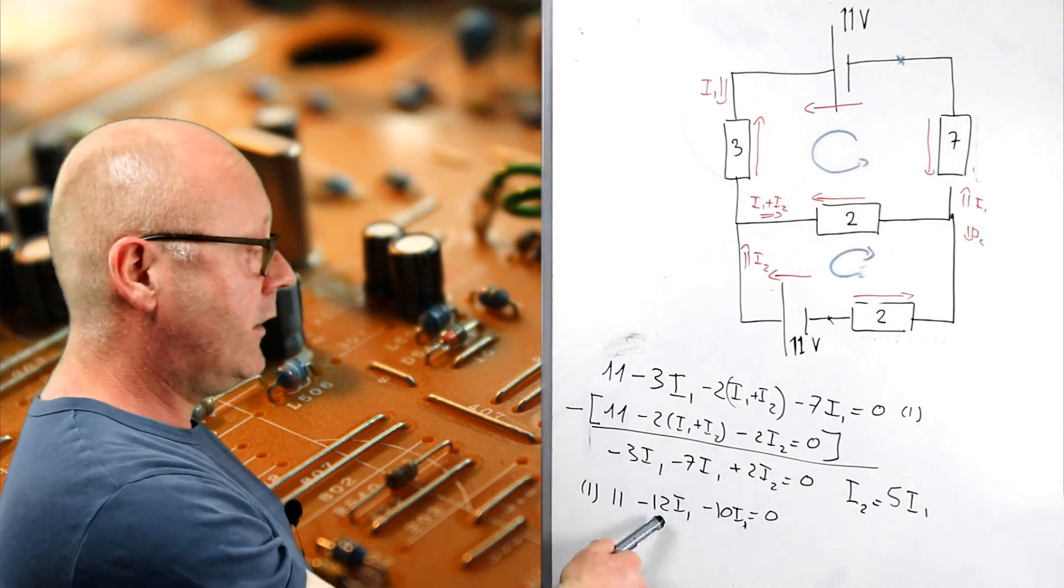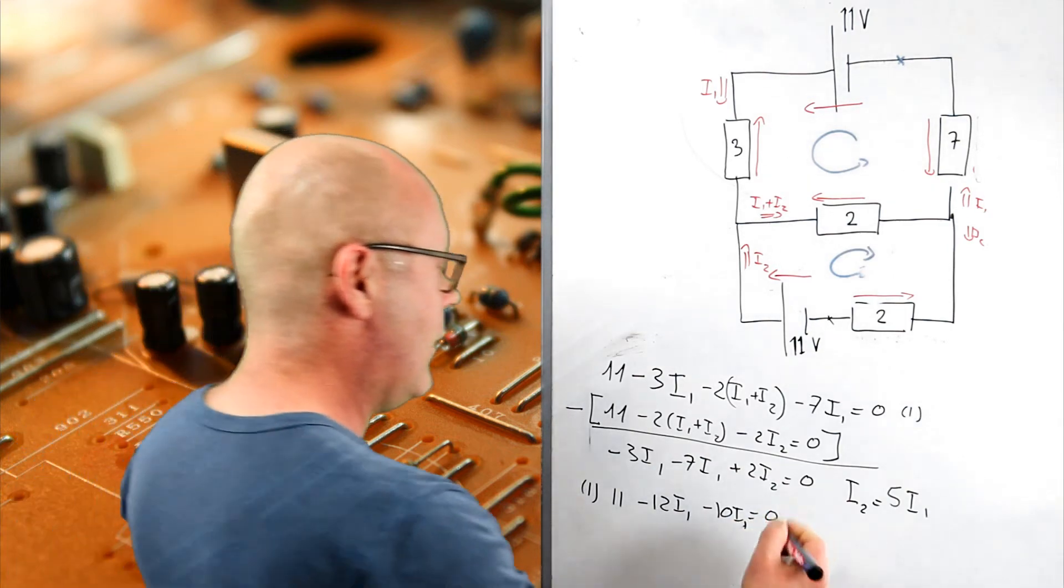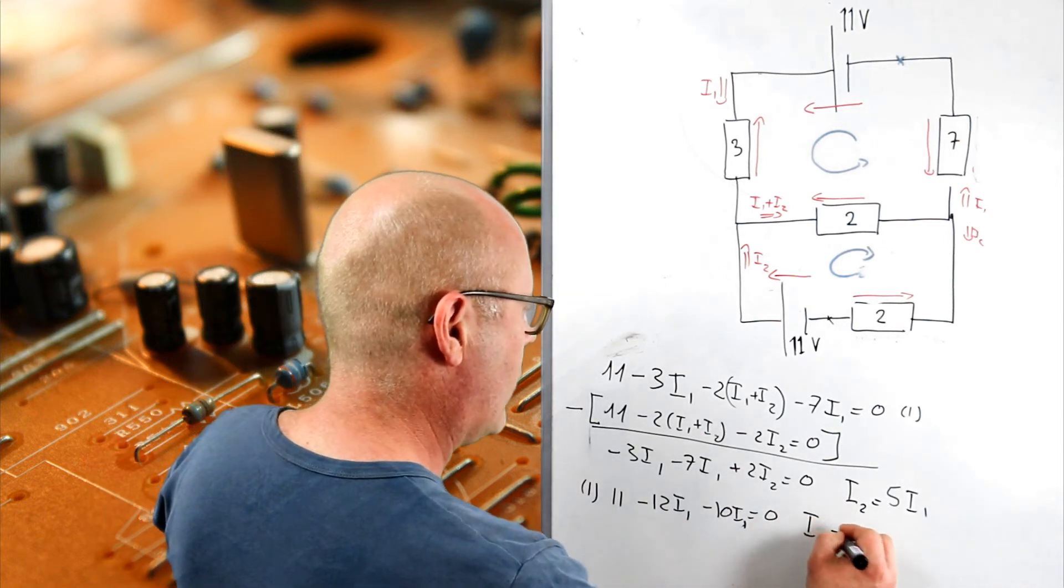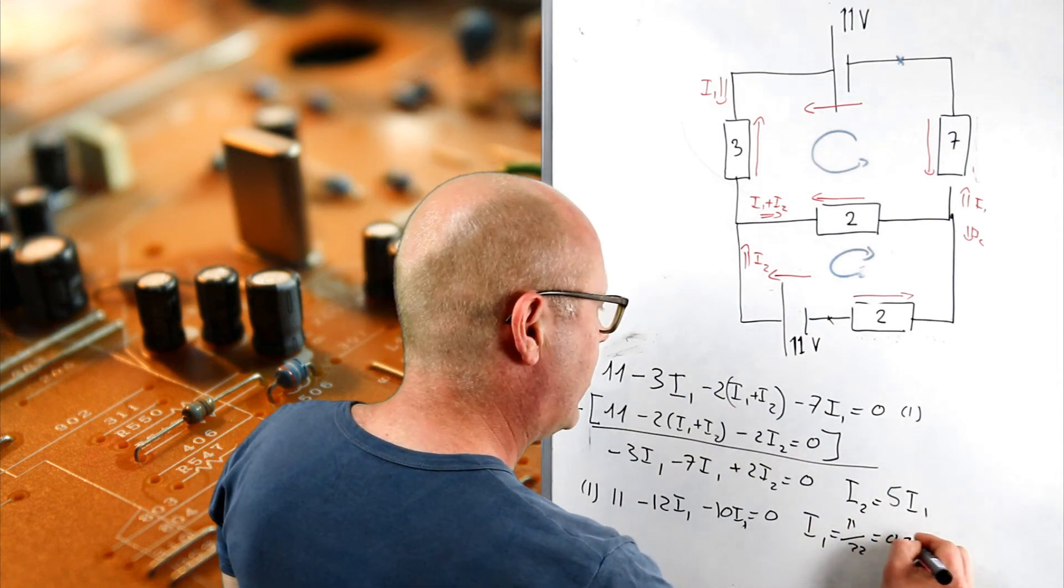If I solve this, it's very easy. I've got minus 22 I1, equals 11. So, yeah. So, I can find I1, equals 11 on 22, 0.5 amps.